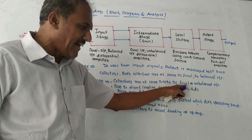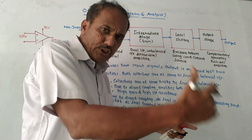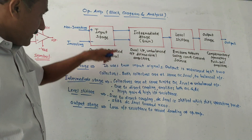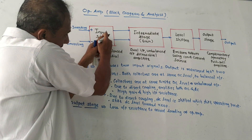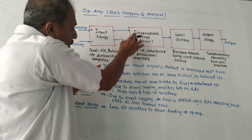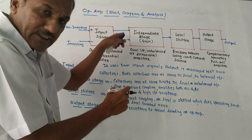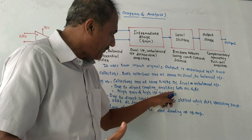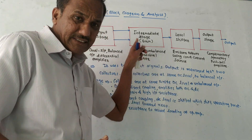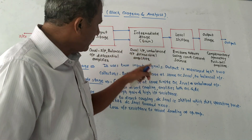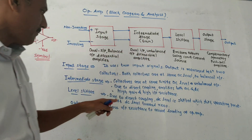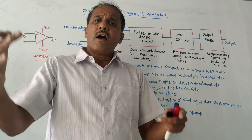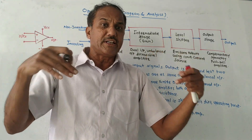The intermediate stage, which is the second stage — the collectors are at some finite DC level, which is not zero, so it is an unbalanced output. There is direct coupling: the input stage is directly connected to this intermediate stage without using a coupling capacitor. Due to direct coupling, this circuit amplifies both AC and DC signals. This stage provides high gain and high input resistance — ideally, in the case of op-amp, input resistance is infinity.